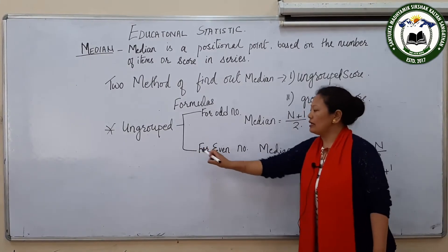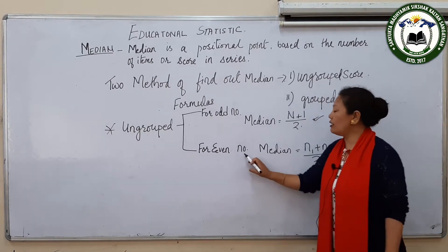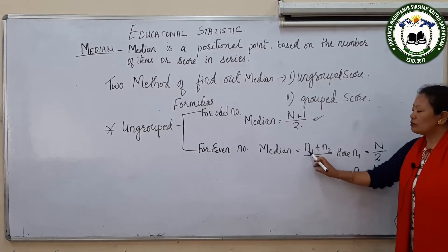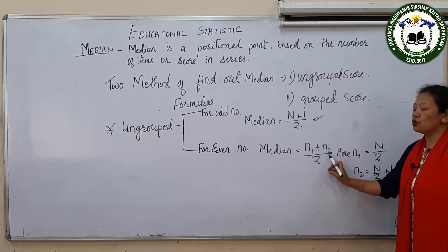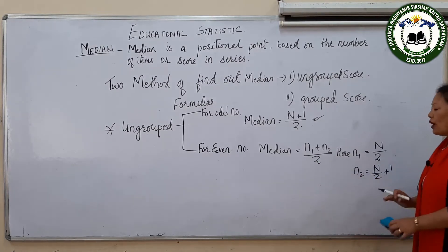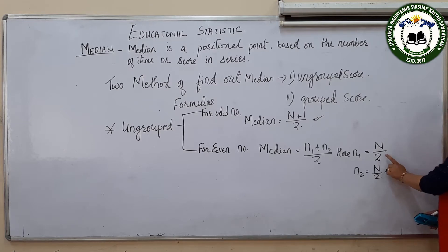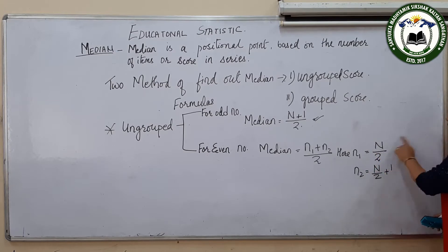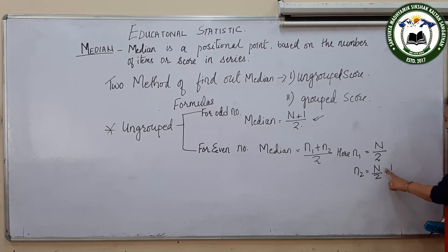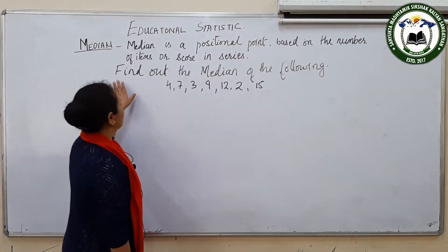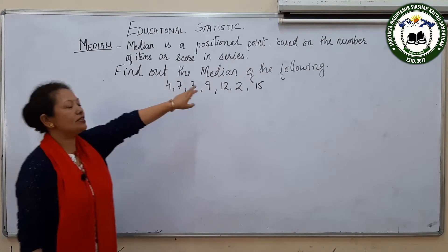The second formula is for even numbers: N1 plus N2 divided by 2, where N1 equals capital N divided by 2 (N being the total number of scores), and N2 equals N divided by 2 plus 1. Here we have certain numbers — now find out the median of the following.